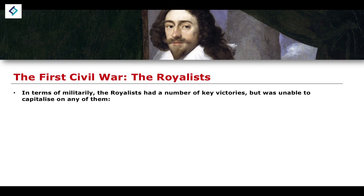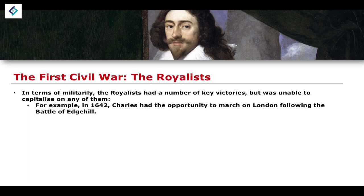Let's think about some of the military history relating to the English Civil War. For the Royalists, there were a number of key victories, but the problem was that Charles was unable to capitalise on any of them. There were opportunities at key points during the conflict for the Royalist forces to potentially march on London and gain an early, swift victory. For example, in 1642, there was the opportunity to march on London following the Battle of Edgehill.